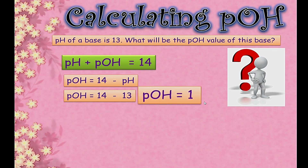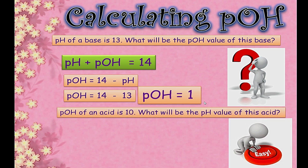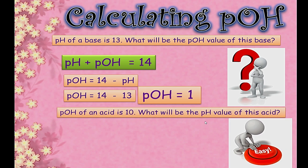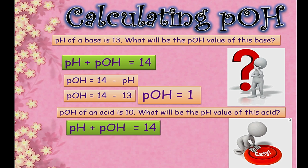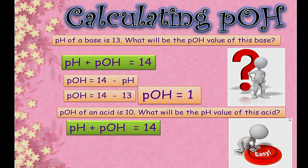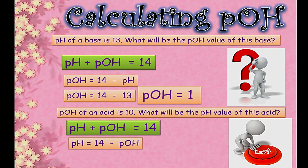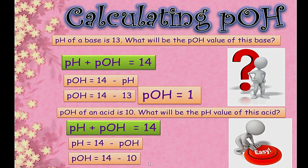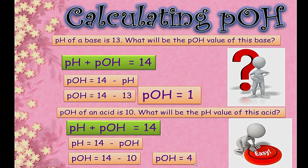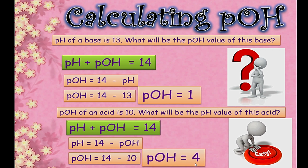Another simple question: if the pOH of an acid is 10, calculate its pH. Using the same formula, pH + pOH = 14, we get pH = 14 − pOH = 14 − 10 = 4. The answer is 4. It's very easy.